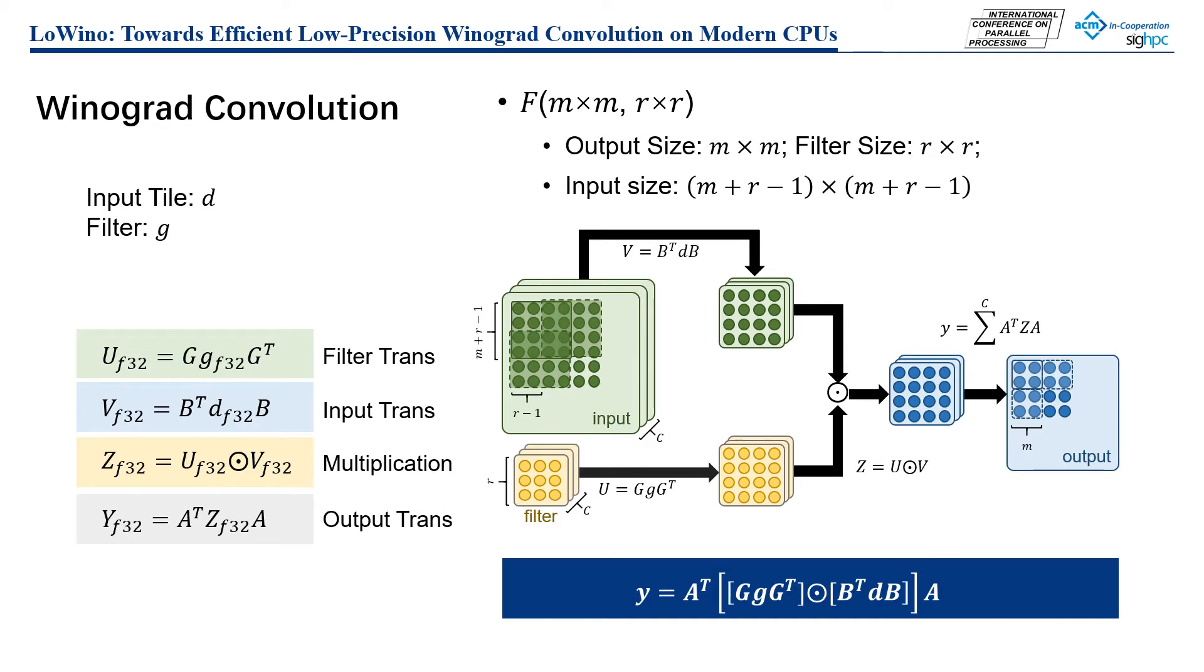There are four operations to compute a convolution using the Winograd algorithm. The first operation is filter transformation. The second operation is input transformation. Then, the transformed input and filter are multiplied in the third operation. Finally, the multiplication result is transformed to the convolution result by output transformation.